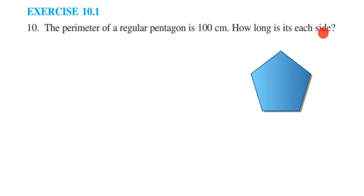Now what is given in the question? We have been given the perimeter of a regular pentagon. Now what is a pentagon? A pentagon is a polygon with five sides — it is going to have five sides.